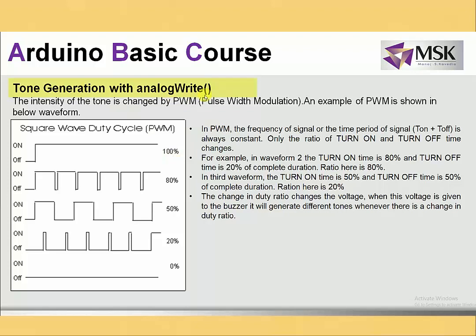The analog write function uses PWM — pulse width modulation. In PWM, you set the high time duration of the pulse. More high time means more average voltage; less high time means less voltage. For example, 80% duty cycle gives high average voltage, 50% duty cycle gives half the total voltage, and 20% gives a lower volume. At 0%, there is no tone. So by setting different duty cycles, you can generate different volumes on the buzzer.